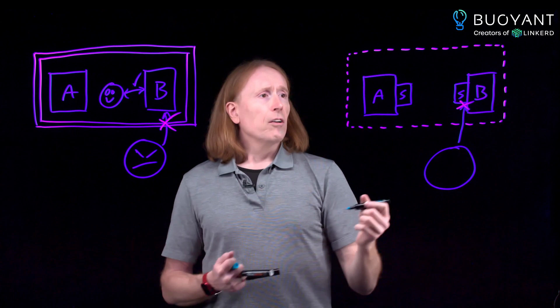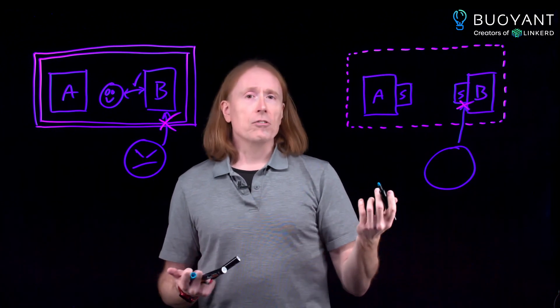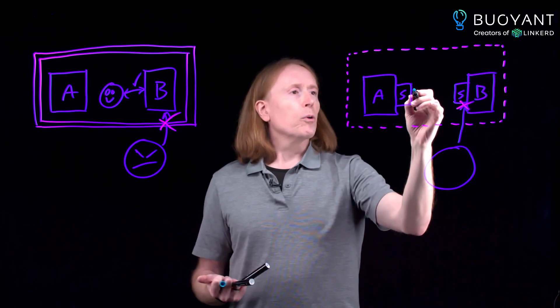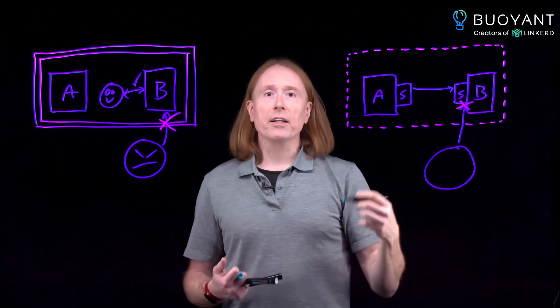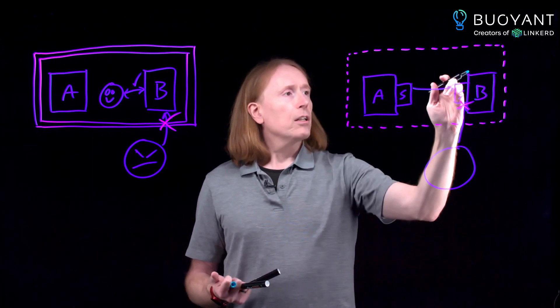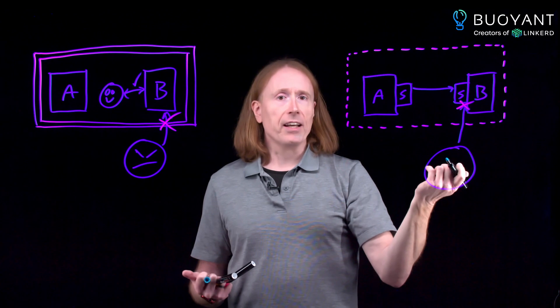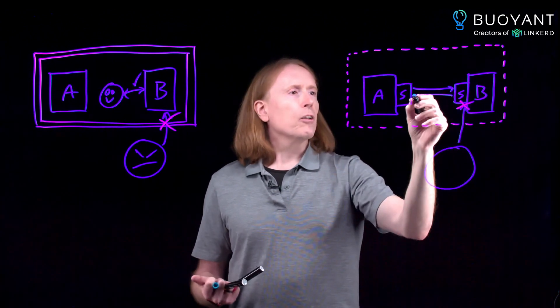Conversely, on the inside of the cluster, the only actors are really other workloads. So it will be the sidecar for workload A talking to the sidecar for workload B. The workload B sidecar will check that, decide it's okay, and allow the response to go back.